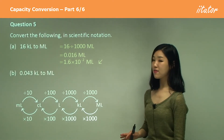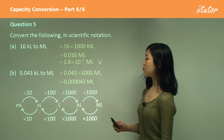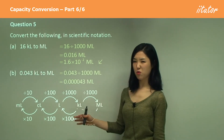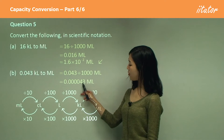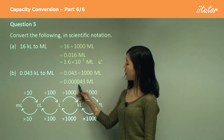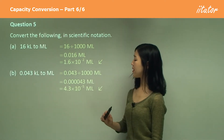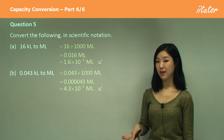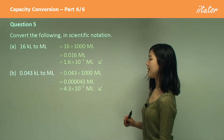Same conversion again — divide by a thousand, which gives lots of zeros. We put the decimal there and go back five places. So it's 4.3 times 10 to the power of negative 5 megalitres.